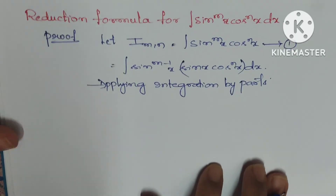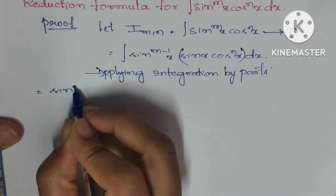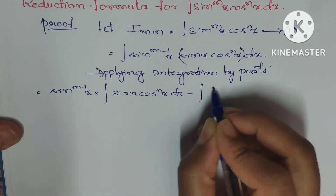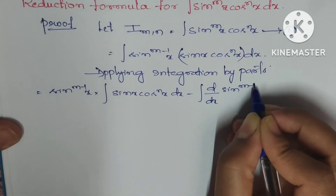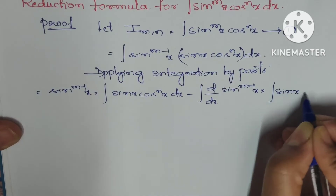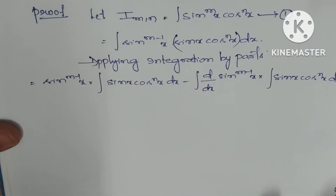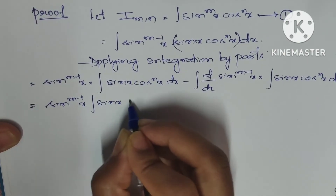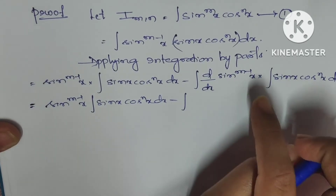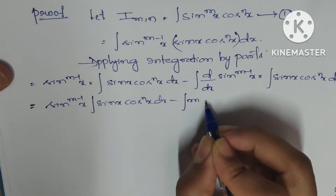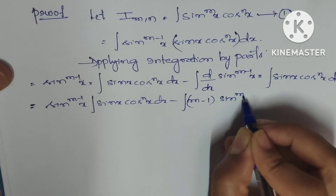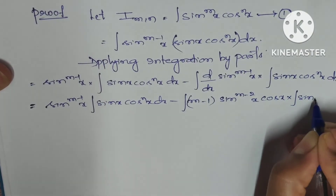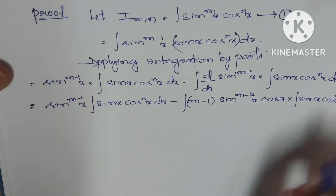Applying integration by parts: we treat sin^(m-1)(x) as the first function and sin(x) · cos^n(x) as the second function. This equals first function × integration of second function, minus integration of [differentiation of first function × integration of second function] dx. So this equals sin^(m-1)(x) · ∫sin(x)cos^n(x) dx, minus ∫[(m-1)·sin^(m-2)(x)·cos(x)] · ∫sin(x)cos^n(x) dx.